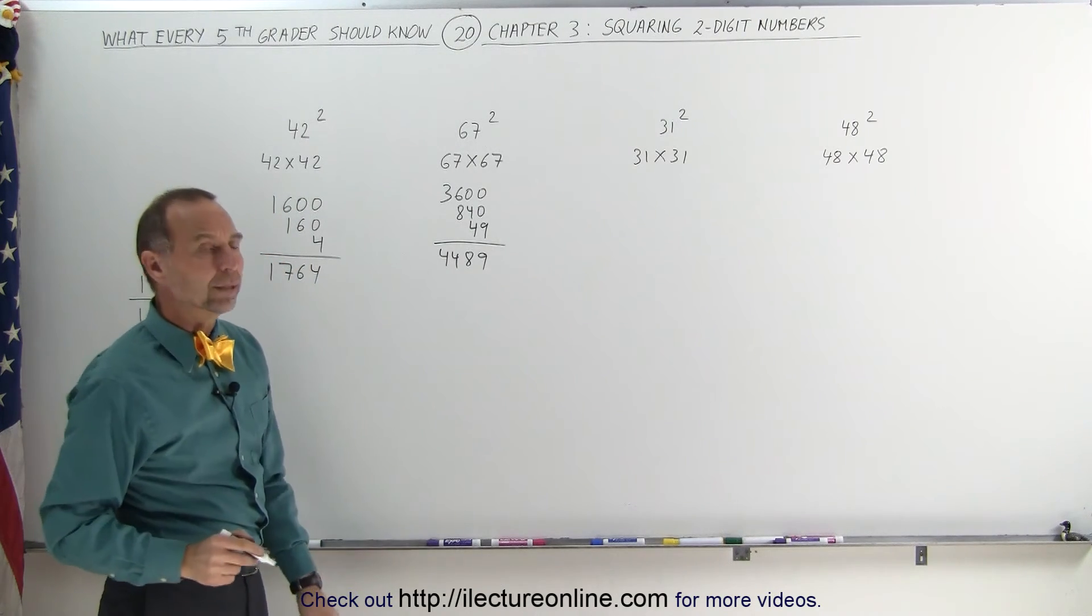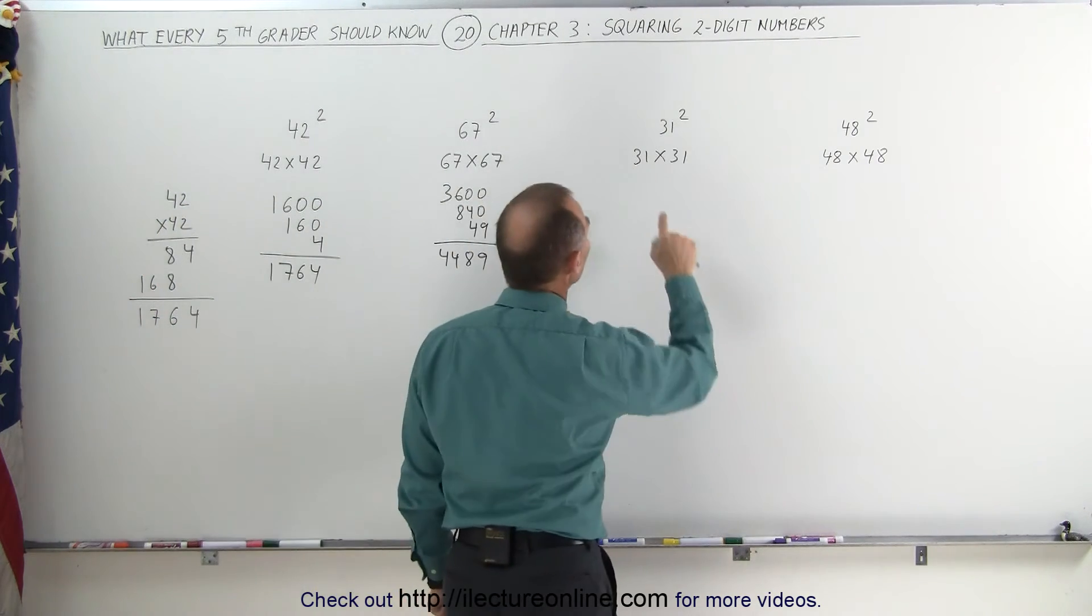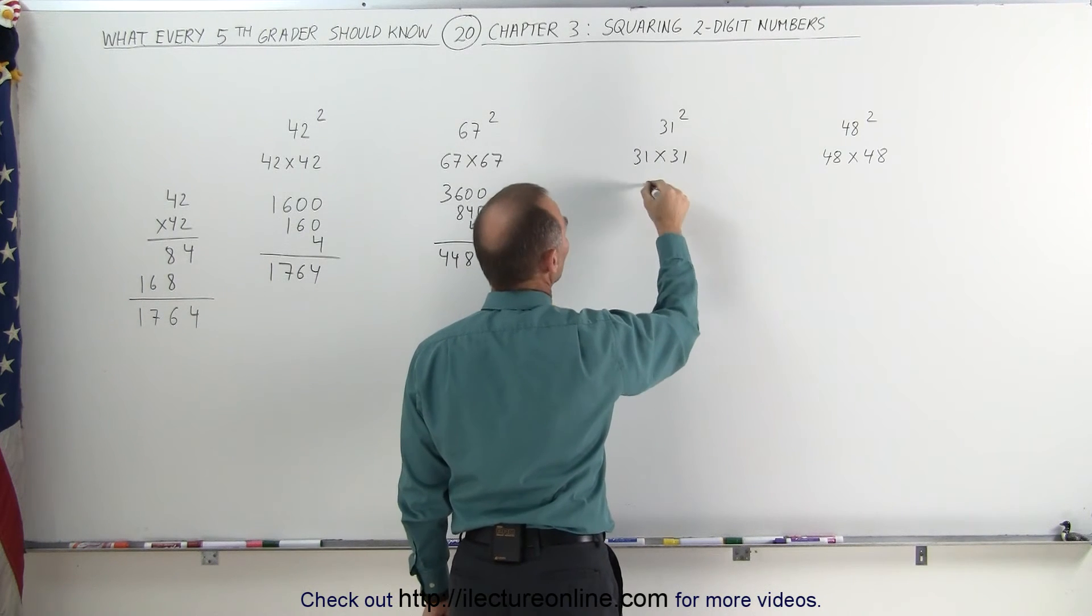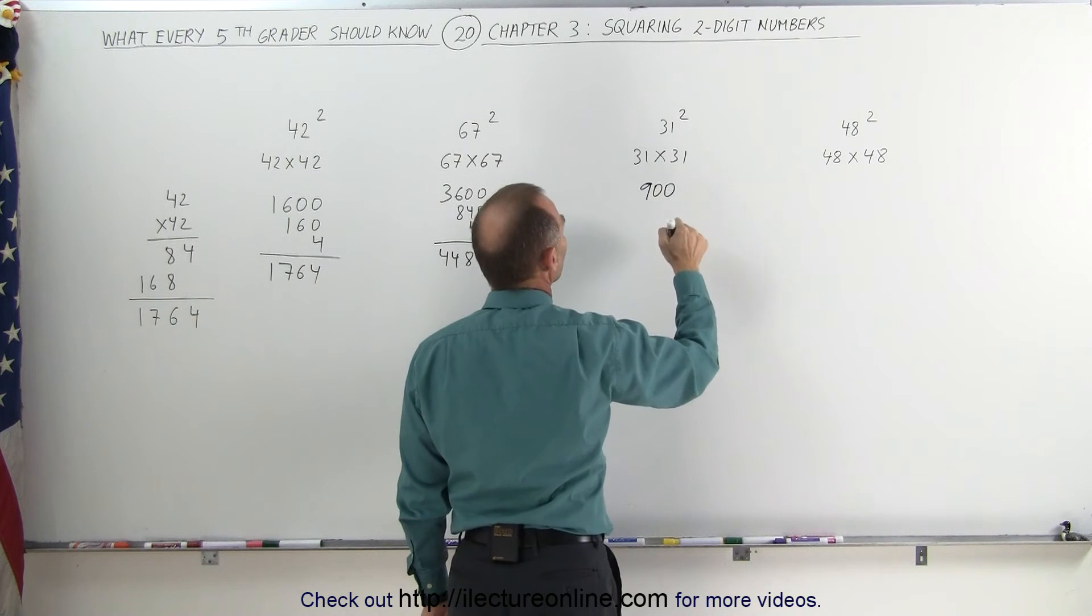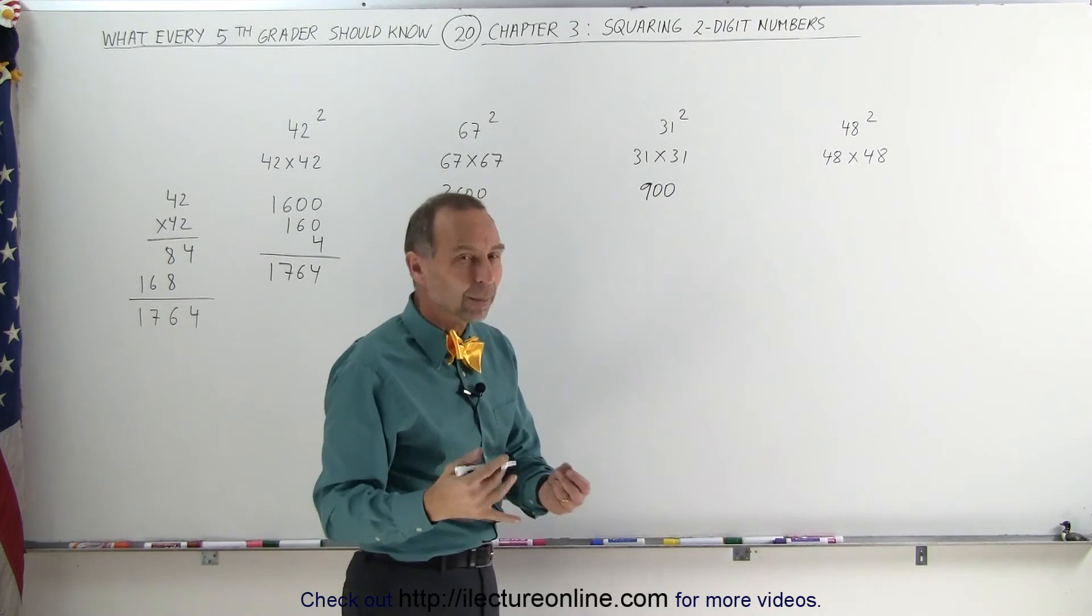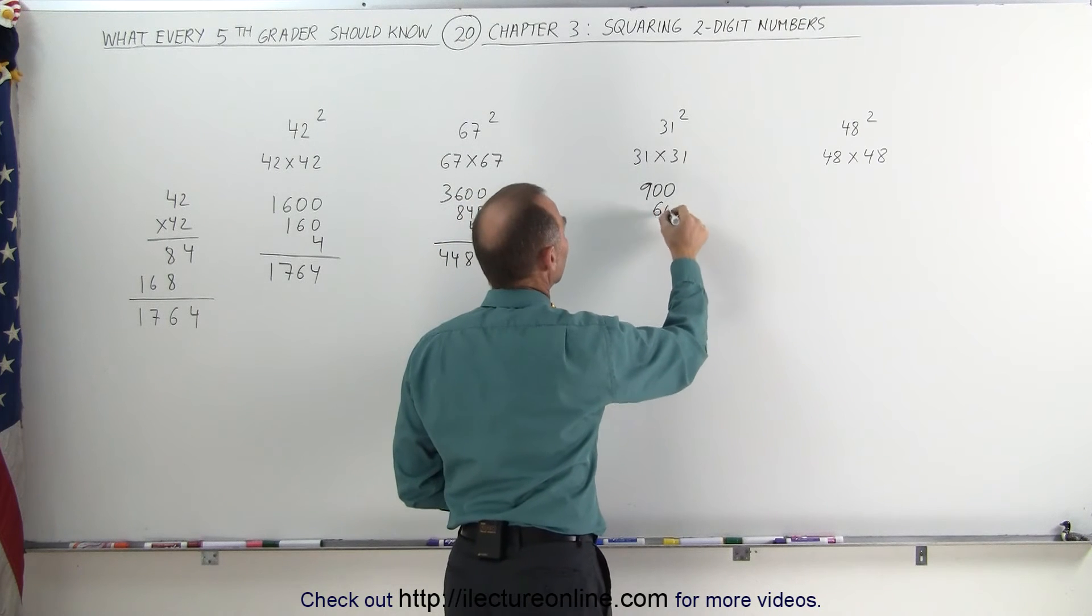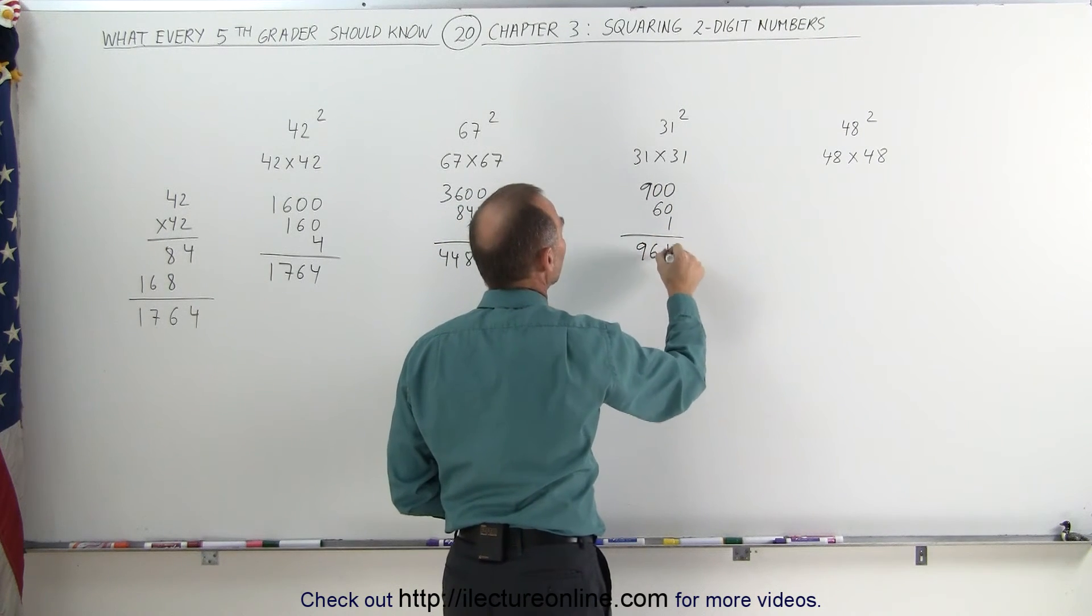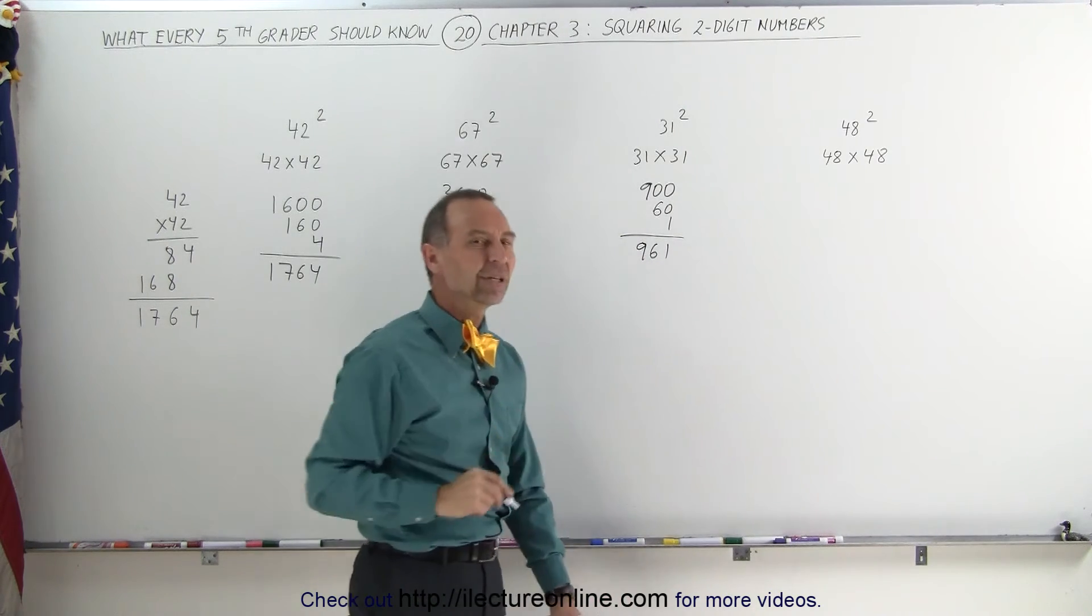How about 31 squared? Same technique again. 30 times 30, you get 3 times 3, that's 9, add two zeros, so you get 900. Now you multiply 1 times 3, or 1 times 30, which is 30. Double that, you get 60. Then you add 1 times 1, which is 1. 961. That was a pretty easy one.